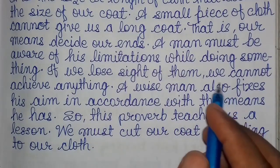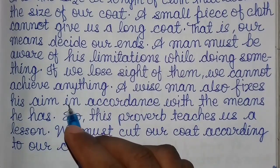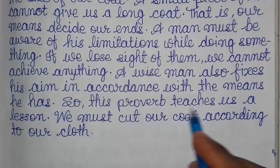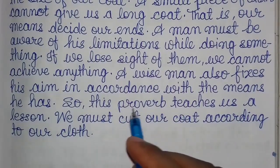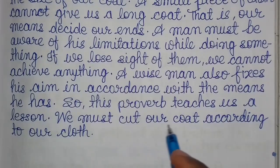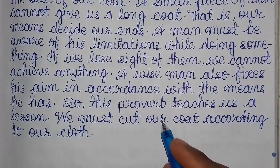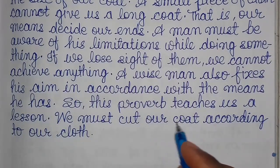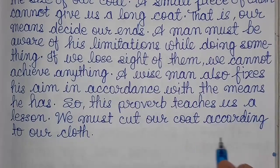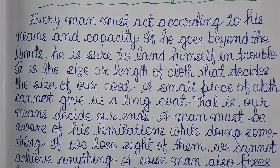और एक बुद्धिमान व्यक्ति उसके पास जो साधन है उसी के अनुसार अपना लक्ष्य सेट करते हैं, फिक्स करते हैं। इस तरह से यह प्रोवर्ब हमें एक लेशन सिखाता है — we must cut our coat according to our cloth — जितना कपड़ा हमारे पास है उसी अनुसार हमें अपने कोट के कपड़े को भी काटना चाहिए। उम्मीद करता हूँ कि आप लोगों को समझ में आ गया होगा और कुछ नया सीखने को मिला होगा।